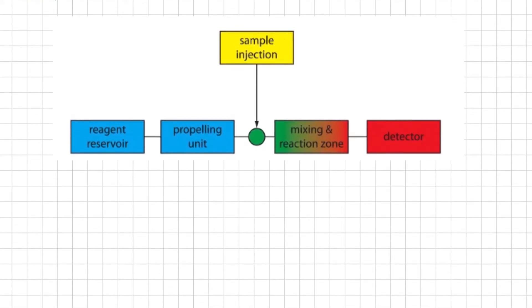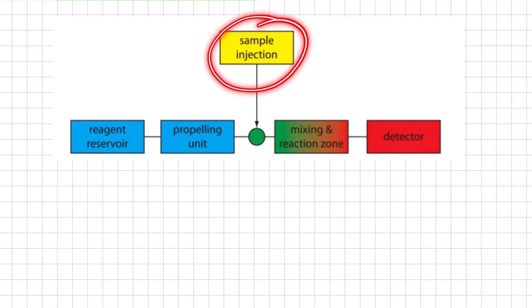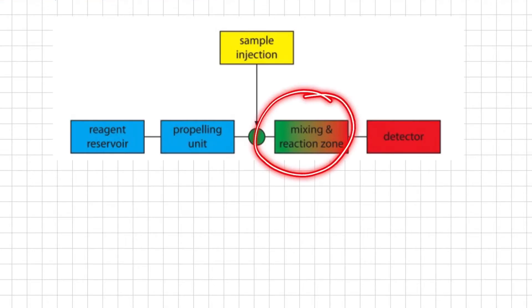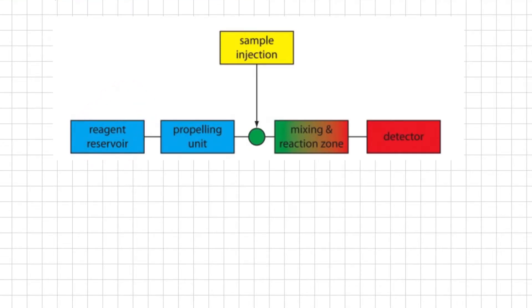A schematic diagram of the basic concepts of flow injection analysis is shown in this figure. The reagent serving as the carrier is stored in a reagent reservoir, and a propelling unit maintains a constant flow of the carrier through a system of tubing that comprises the transport system. We inject our sample directly into the flowing carrier stream, where it travels to one or more mixing or reacting zones before reaching the detector or flow cell. This is the simplest design for the flow injection analyzer, consisting of a single channel with one reagent reservoir. Multiple channel instruments that merge separate channels, each introducing a new reagent into the carrier stream, are also possible.